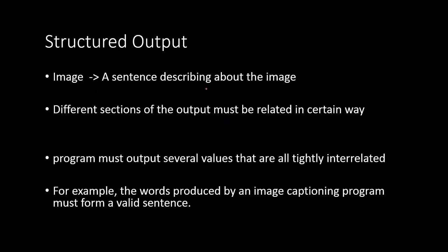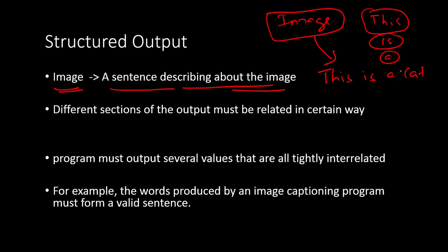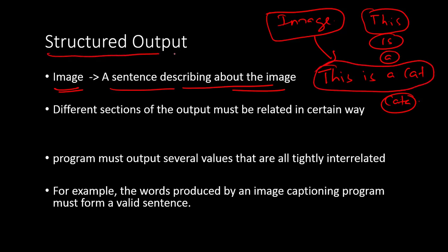Structured output is a type of machine learning task where you provide an image and the output is a sentence describing that image. For example, given an image, the output might be 'This is a cat,' which is a grammatically correct sentence. The different parts of the output are related to each other and must be arranged in the correct structure so that the result is grammatically correct.